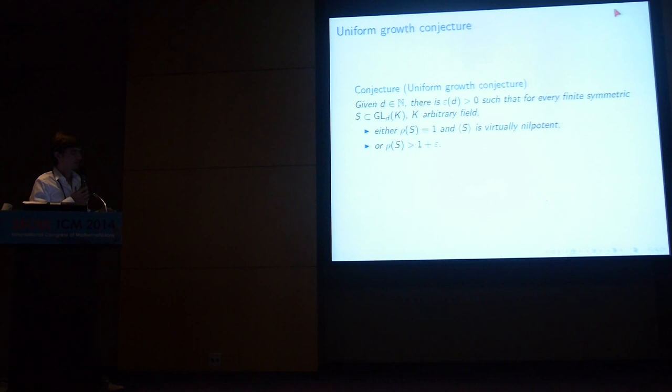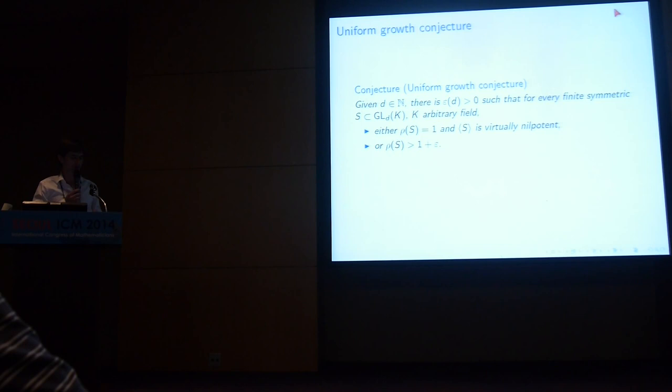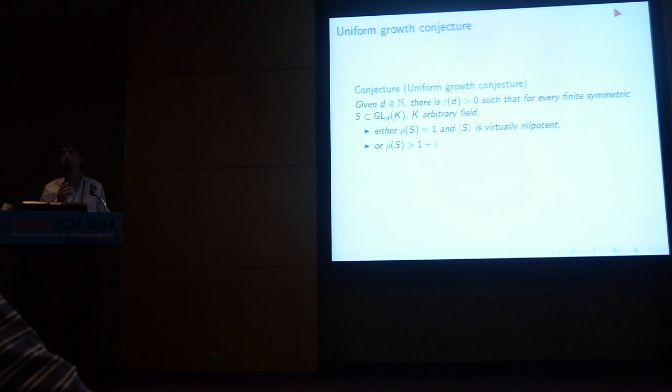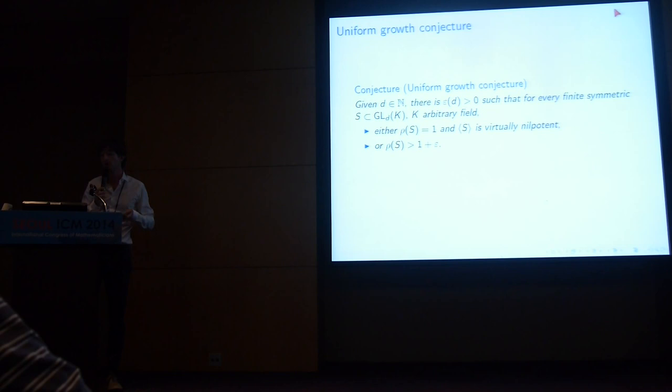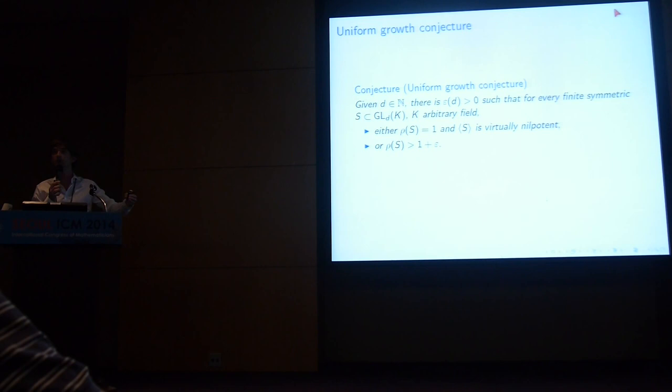Here is the uniform growth conjecture: for groups in GL_d over an arbitrary field, there should be a gap. Either the growth rate is 1 — in which case you should be virtually nilpotent and have polynomial growth — or the growth rate must be strictly bigger than 1 by an isolated amount, as in the Lehmer conjecture. The key point is that this epsilon should depend on d but not on the field.